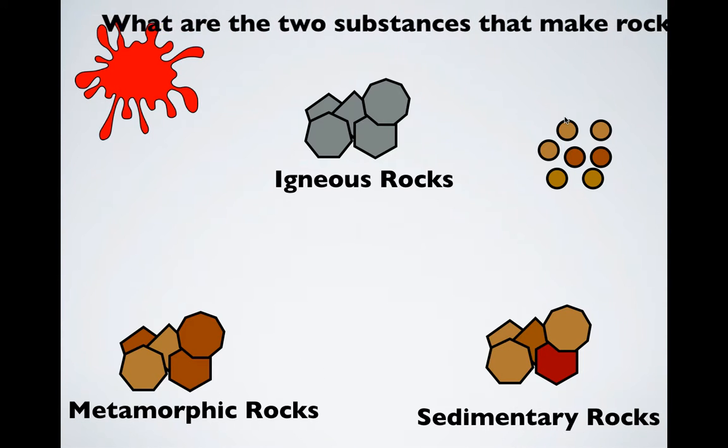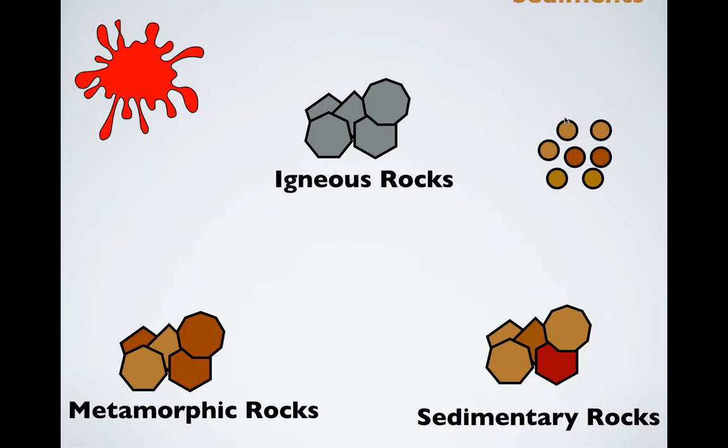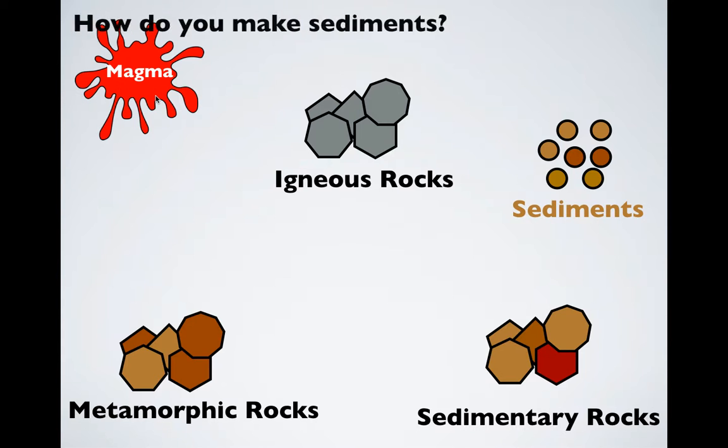Now, what substances make rock? The first is sediments. Sediments are just tiny little pieces of minerals and other little bits of stuff that are broken down by weathering. And then magma, which of course, as we looked at last time, comes from that convection current stuff kind of popping through the surface of the crust.